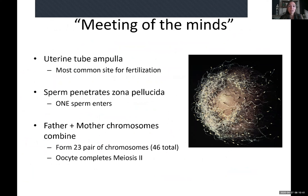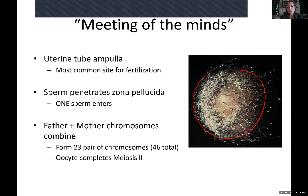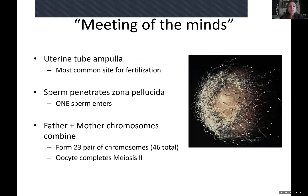Fertilization is happening in the ampulla, which is the most common site. If it happens outside the ampulla — in the abdominal cavity or fallopian tube — it's known as an ectopic pregnancy, meaning 'out of place.' Thousands of sperm surround the egg but only one gets in. That single sperm penetrates the corona radiata and then the zona pellucida — a tough outer shell — using its acrosome to deliver the sperm nucleus into the egg.